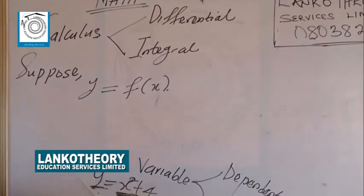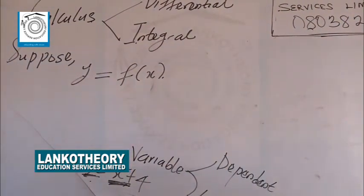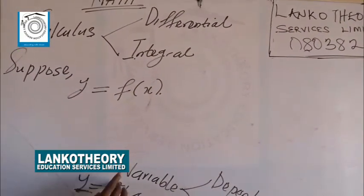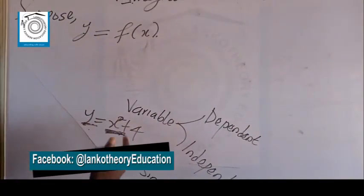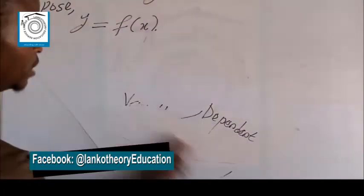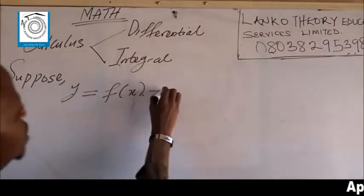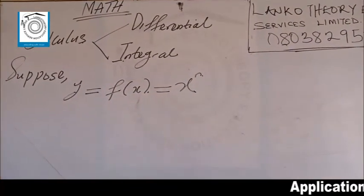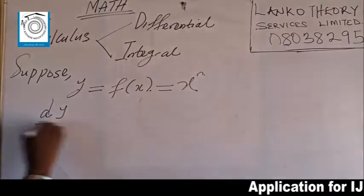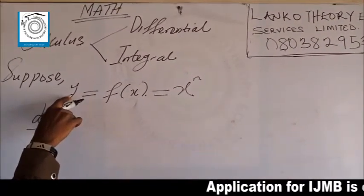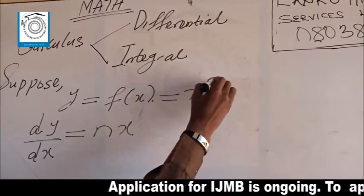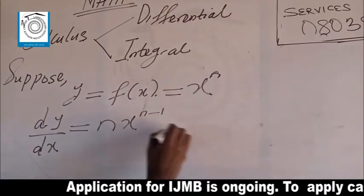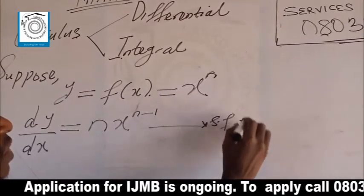Y is defined in terms of X, and that's what you call dependent and independent variable. So when you have an explicit function — Y equal to X squared plus 4 — this is an explicit function because it is defined clearly. So Y depends on X, Y would be the dependent variable, and X will be the independent variable. And as you can see here, if Y is equal to X to the power of N, where N is a real number, then the derivative dY/dX will be equal to N times X to the power of N minus 1. That is the standard formula for differentiation.